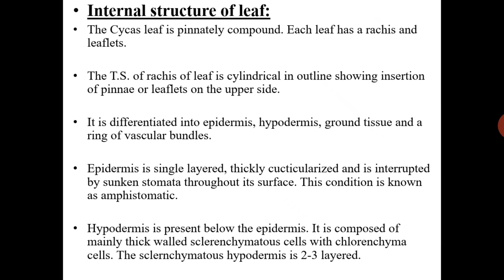Next comes the internal structure of the leaf. The Cycas leaf is pinnately compound — each leaf has a rachis and leaflets, with leaflets on opposite sides of the rachis. The transverse section of the rachis is cylindrical in outline, showing insertion of pinnae or leaflets on the upper side. It is differentiated into epidermis, hypodermis, ground tissue, and a ring of vascular bundles. Epidermis is single-layered, thickly cuticularized, and interrupted by sunken stomata over its surface.